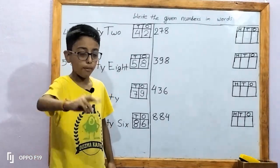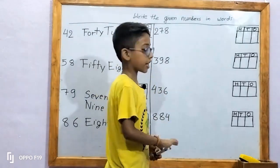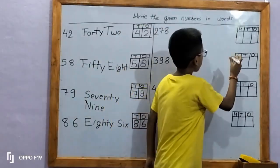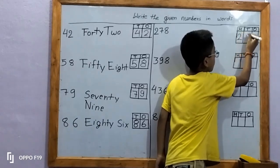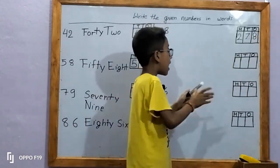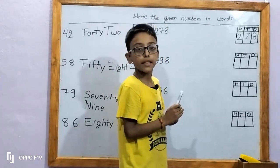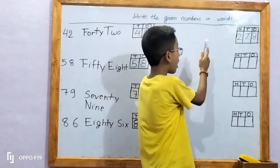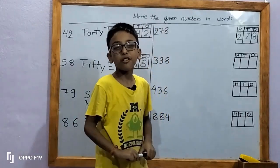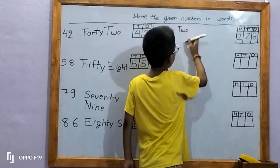Let's move on to the three-digit numbers. In the first three-digit number, that's given 278. Let's write in place: two, seven, eight. Eight is in one's place; eight ones means eight. Seven is in ten's place; seven tens means 70. Two is in hundred's place; two hundreds means 200. It makes the number 278. Let's write in words: T-W-O, 2.